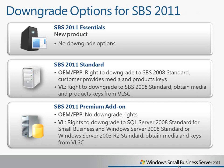Next, when we take a look at downgrade options for SBS 2011 — again, for the Essentials product, because it's new, there are no downgrade options. For SBS 2011 Standard, if you purchase through OEM or retail channels, you have the right to downgrade to SBS 2008 Standard, but the customer needs to provide the media and product keys. If you purchase through volume licensing, you also have the right to downgrade to SBS 2008 Standard, and you can obtain the media and product keys from VLSC.